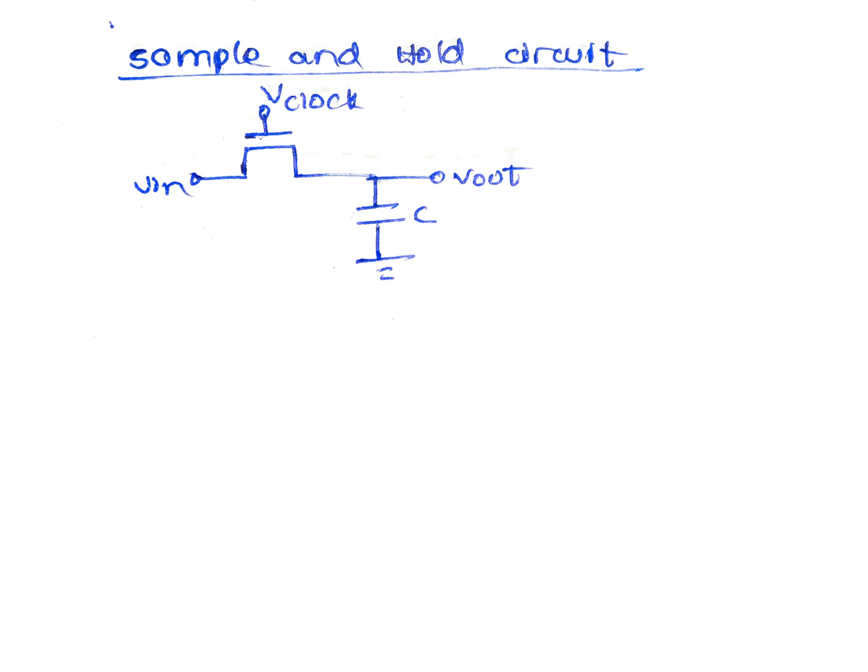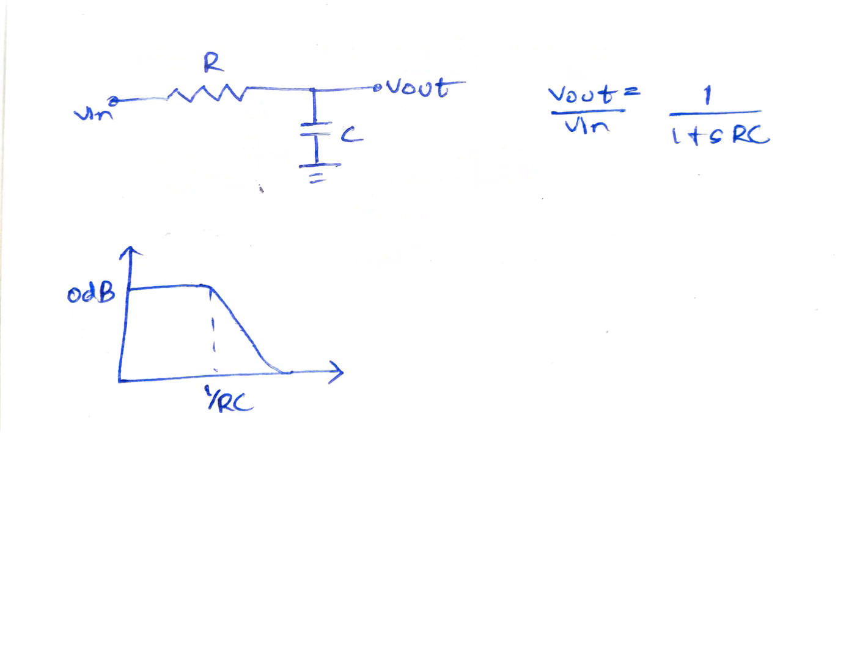When clock is logic 1, MOSFET behaves like a resistor. This is how the sample and hold circuit looks like when the clock is 1.